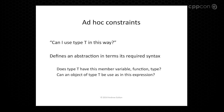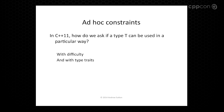Ad hoc constraints are my favorite — this is the last type. So we have this question: can I use T in this way? Can I write this expression with an argument of type T? Can I access this member variable or member function? Or can I access this member type, like T::value_type?